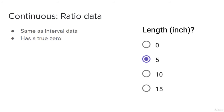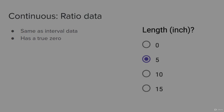Continuous ratio data is similar to interval data — values are ordered and the difference between each value is the same — but it has a true zero. Good examples include length, height, distance, and speed: length can be zero, distance can be zero, and speed can be zero.